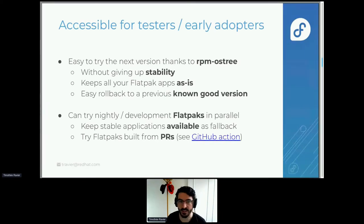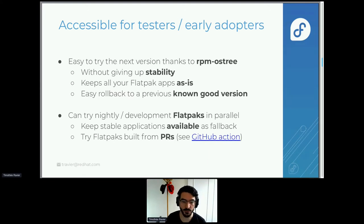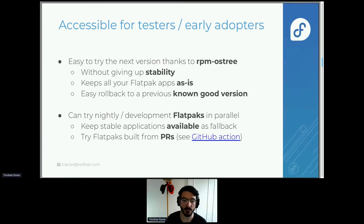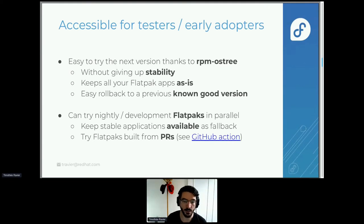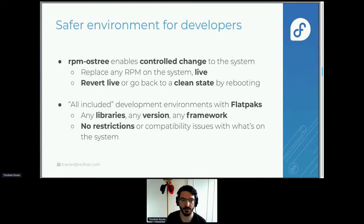The second goal is to make things great for testers and early adopters — those who want to try a new version, a new package, or a bug fix. With rpm-ostree you can try new versions very easily because you just rebase to the new version, and if things don't work you can easily roll back to the previous one. With Flatpaks you can install several versions in parallel at the same time, and you can even test versions from peers — for example for those who have set up GitHub Actions.